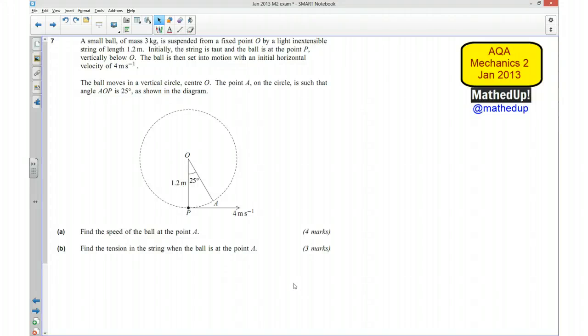Hi, this is question number seven from the January 2013 Mechanics 2 exam paper. In this question we've got a small ball of mass 3 kilograms that is suspended from a fixed point O by a light inextensible string of length 1.2 meters. Initially the string is taut and the ball is at the point P, vertically below O.